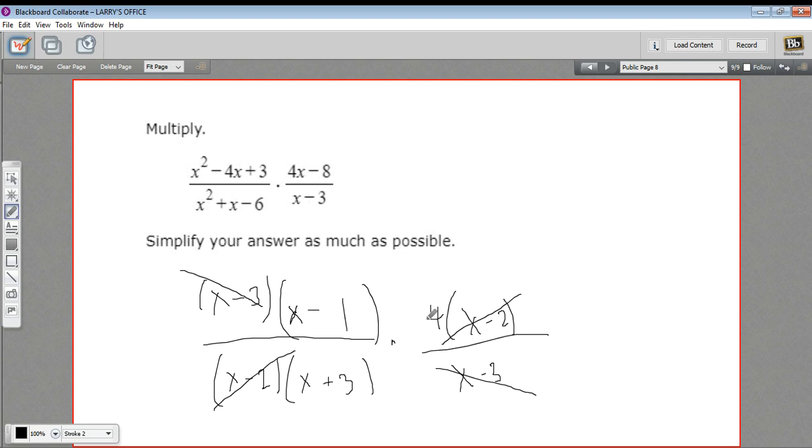And now we can just go ahead and rewrite this. On the top I'm left with 4 times x minus 1, and on the bottom I just have x plus 3, and that is my answer. It's much simpler than what we started with, and so make sure to try to factor things and see what terms you can cancel out before you do any multiplication.